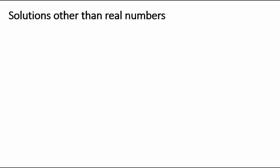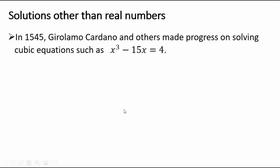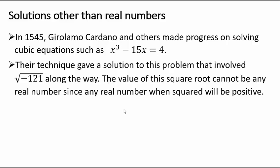Let's talk about solutions that are not real numbers. In 1545, there was a mathematician named Cardano, and many other mathematicians working simultaneously. They saw that solving cubic equations like x³ - 15x = 4 involved radicals that gave rise to square root of negative 121.